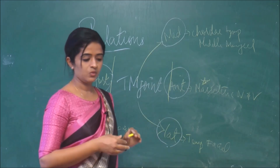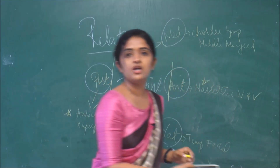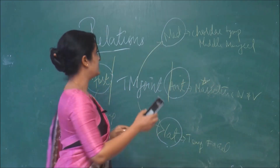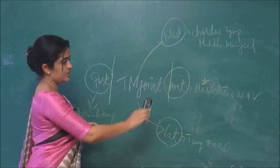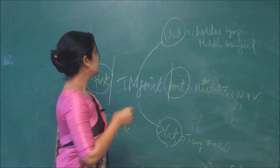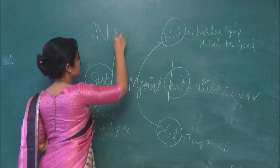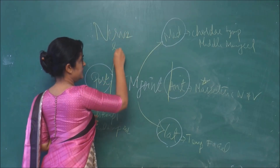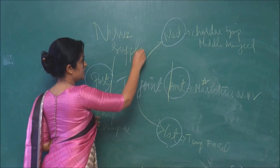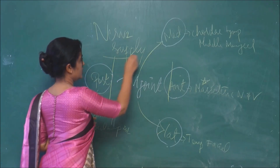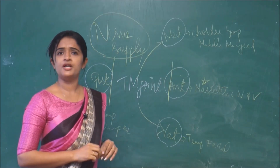The next heading will be the nerve supply and blood supply of the temporomandibular joint. If we keep this diagram in mind, we can derive the nerve supply very easily. So, what about the nerve supply of the temporomandibular joint?